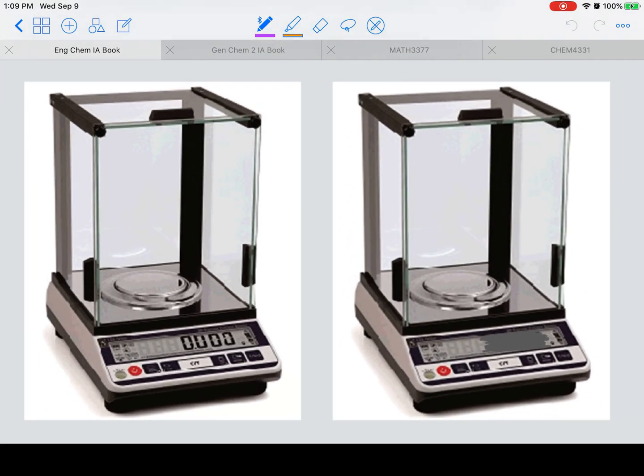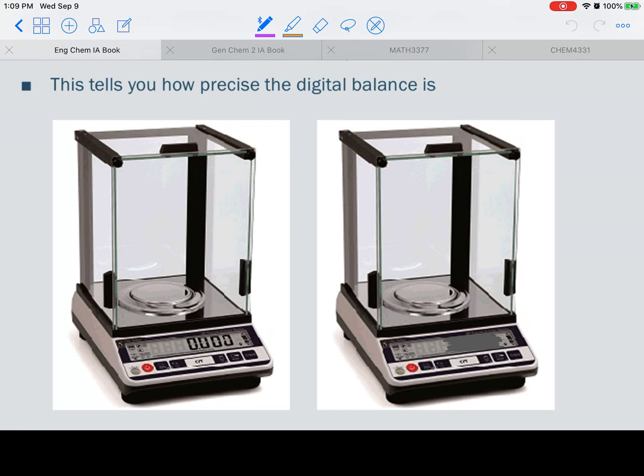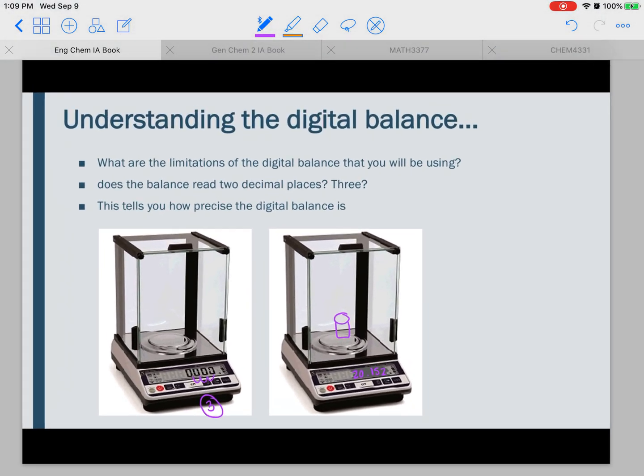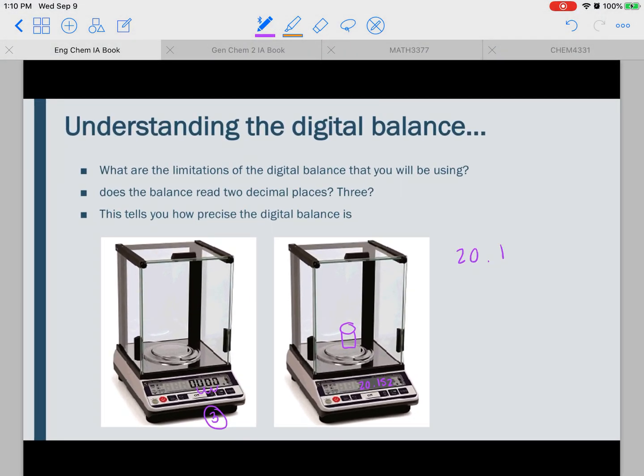So I have these little scales, and I'm just going to do an example. On the scale on the left, it's zeroed out, and you can see that it has one, two, three decimal places. So that means, let's say we weigh a beaker over here, I'm going to put a beaker on the scale, and then the scale says like 20.152 grams. That means in our notebook, we're going to write 20.152 grams.